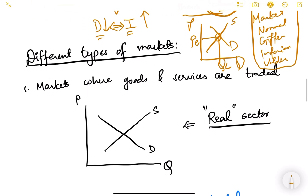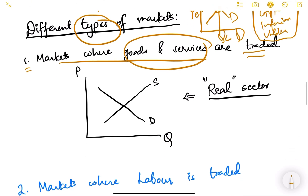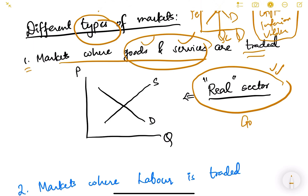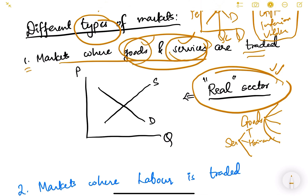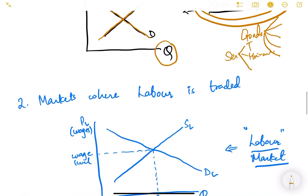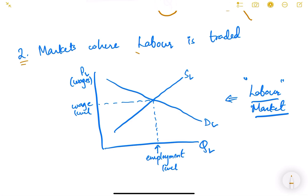Now let us look at different types of markets. The first type is where goods and services are traded — this is known as the real sector market. Goods can be agricultural products, manufactured products, cars, aeroplanes — anything. Services include transportation, haircuts, education, health, etc. In the real sector market, the demand curve is downward sloping and supply curve is upward sloping, with price on the y-axis and quantity on the x-axis.